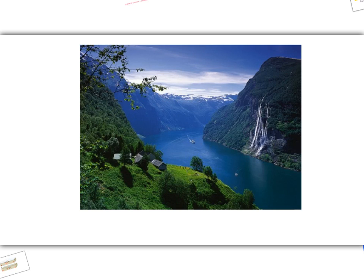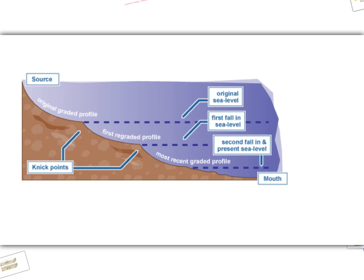An example of a feature created by rising sea levels is fjords in Norway, which are created when a U-shaped valley is flooded. In colder periods, the ocean water is colder and contracts. In addition, it is also held in storage as glacial ice. This causes a fall in the sea level.